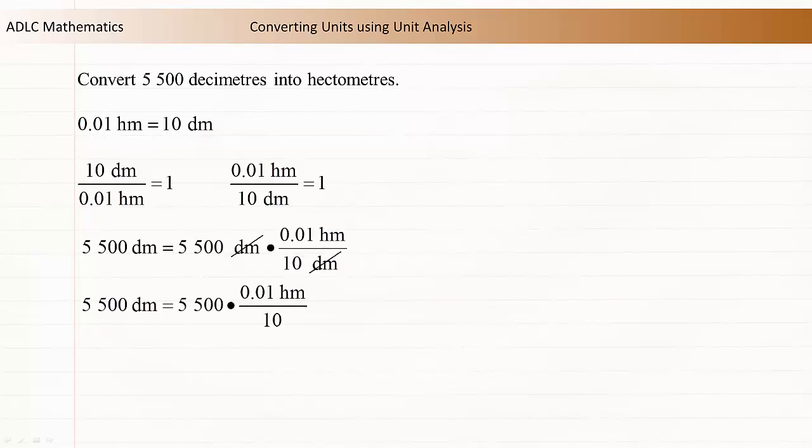Simplify and evaluate this expression on the right side of the equation. So 5,500 decimeters is equal to 5.5 hectometers.